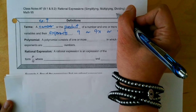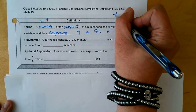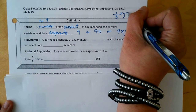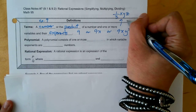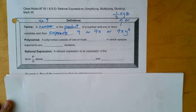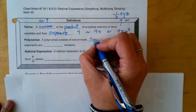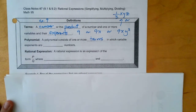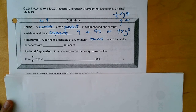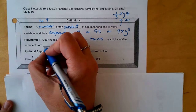Or it could even be one-third xyz — that could be another example of one term. We've talked about polynomials before, in Math 65. A polynomial consists of one or more terms in which variable exponents are all whole numbers.